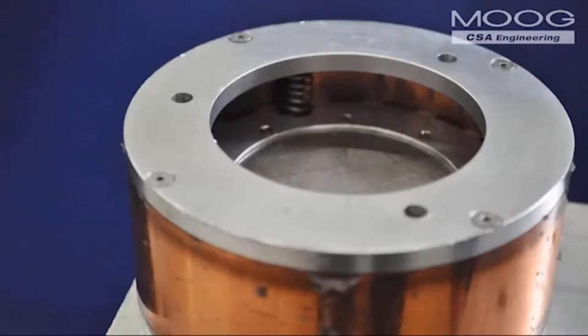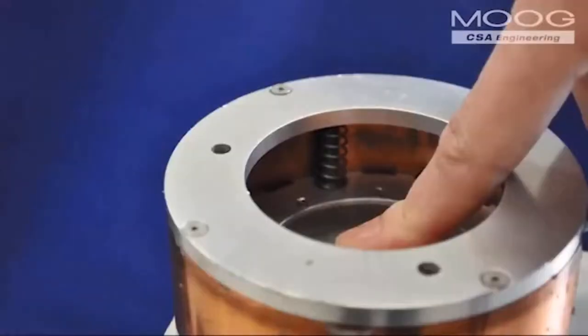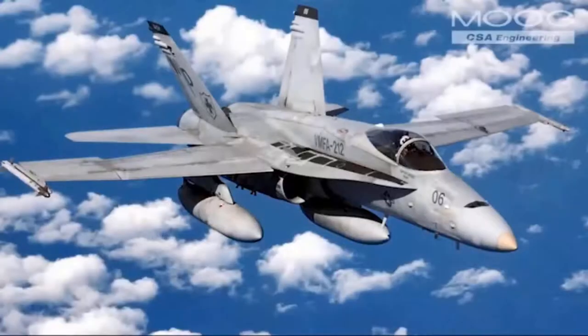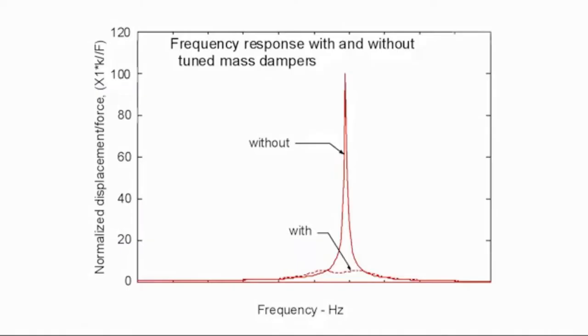Highly effective magnetic TMDs have become practical with the development and widespread availability of rare earth magnetic materials. This particular magnetic TMD was designed to eliminate an oscillation in the vertical tail structure of a fighter aircraft. Under certain airflow situations, turbulence was inducing undesirable vibration levels.